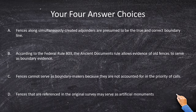There are four possible answer choices. Number one: fences along simultaneously created adjoinders are presumed to be true and correct boundary lines. Number two: according to federal rule 803, the ancient documents rule allows evidence of old fences to serve as boundary evidence. Choice three: fences cannot serve as boundary markers because they are not accounted for in the priority of calls doctrine. And four: fences that are referenced in the original survey may serve as artificial monuments.